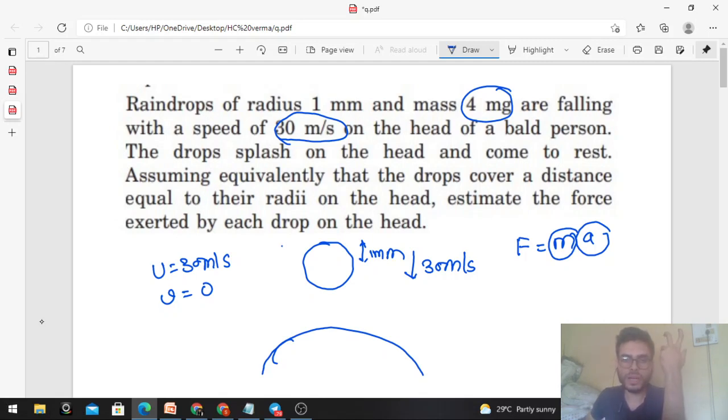The distance covered is equal to the radius of the raindrop. We have to assume the equivalent distance the raindrop covers, which is the radius of the raindrop, which is 1 mm. So s I will assume is 1 mm.